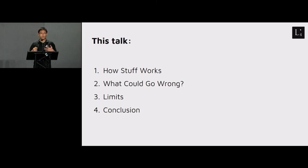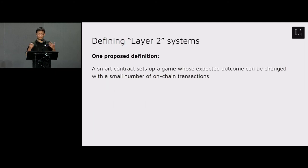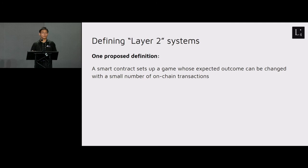In this talk, I'm going to go through some specific constructions regarding state channels and state channel networks, specific attacks, and what kind of limits apply to all Layer 2 systems. Before I go into specific constructions, it would be good to define Layer 2 systems. Layer 2 generally means things like state channels and plasma, and one definition I heard from Vitalik in March is that a Layer 2 system is when a smart contract sets up a game whose expected outcome can be changed with a small number of on-chain transactions.